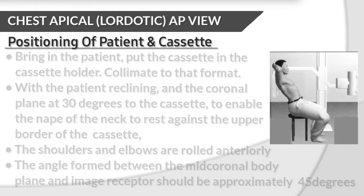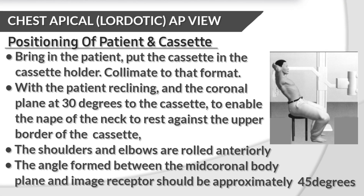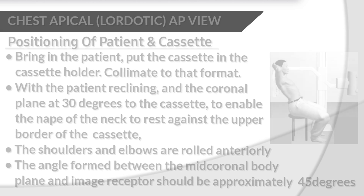Positioning of patient and cassette. Bring the patient beside the cassette stand and put the cassette in the cassette holder. Position the patient reclining with the coronal plane at 30 degrees to the cassette, enabling the nape of the neck to rest against the upper border of the cassette. The shoulders and elbows are rolled anteriorly. The angle formed between the mid-coronal body plane and image receptor should be approximately 45 degrees.